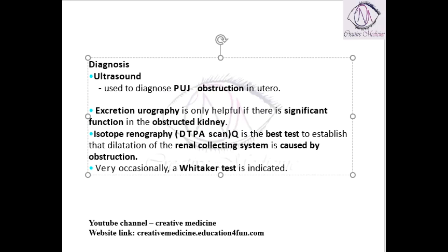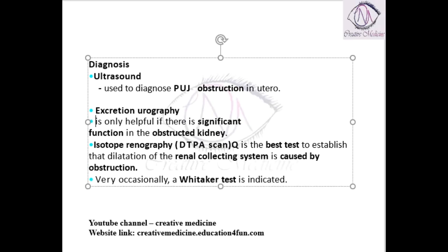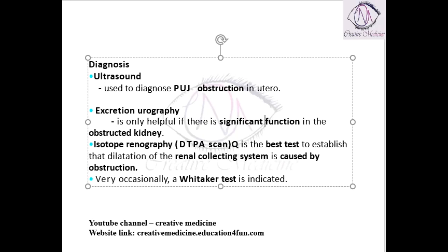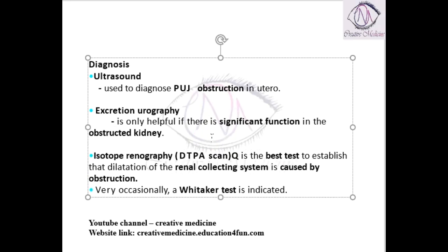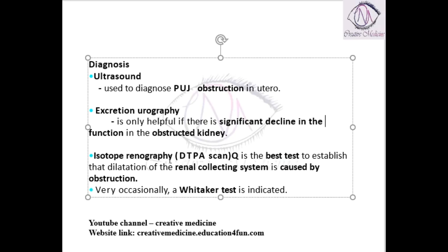The next investigation is excretion urography. Excretion urography is helpful only when there is significant obstruction causing a significant decline in kidney function. Only then can we use excretion urography.